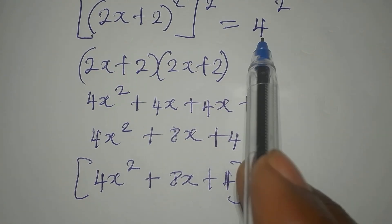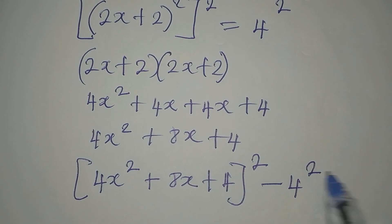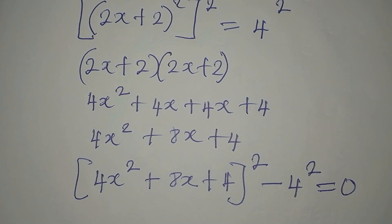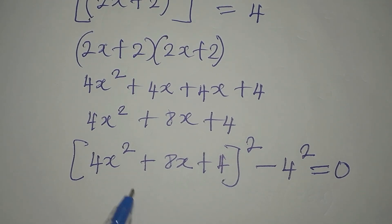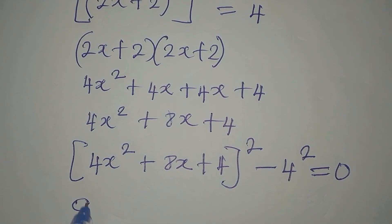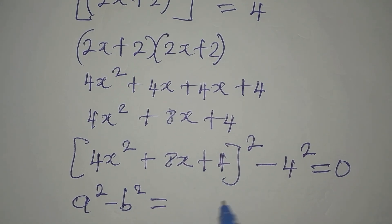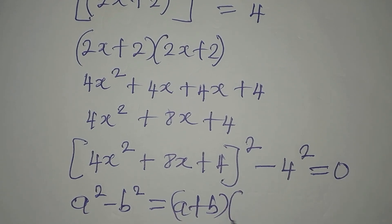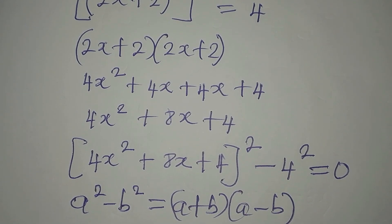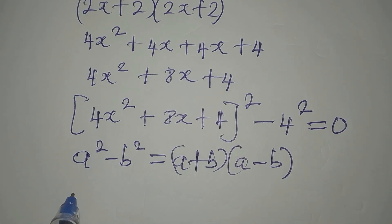So we have (4x² + 8x + 4)² with a square on it. If I take 4² to the left side it becomes minus 4², and everything equals zero. Now we can apply the difference of two squares: a² - b² = (a+b)(a-b).